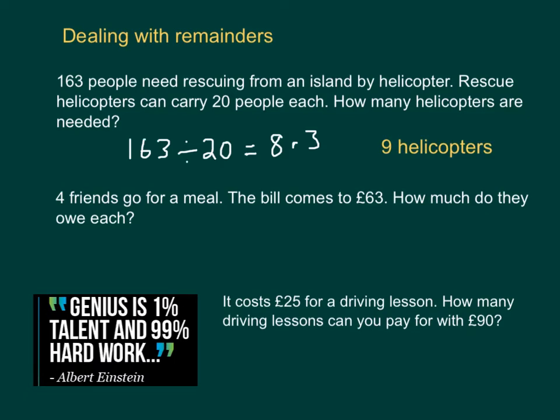So, for the first question, we'd have to do 163 divided by 20, gives us 8 remainder 3. Now, that would tell us that we'll need 9 helicopters, because actually 8 helicopters wouldn't be enough for all the people. There would still be 3 left over.